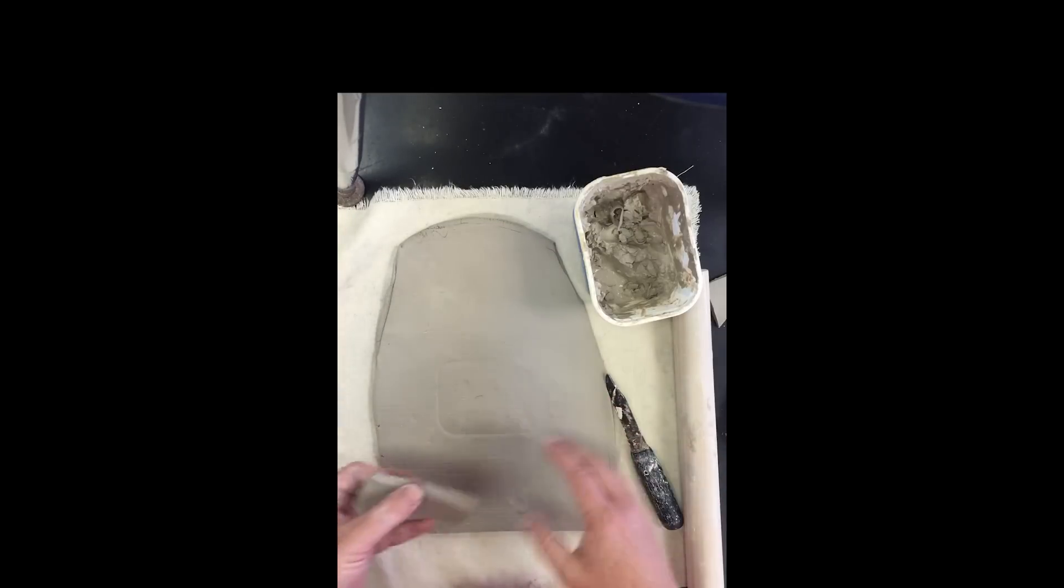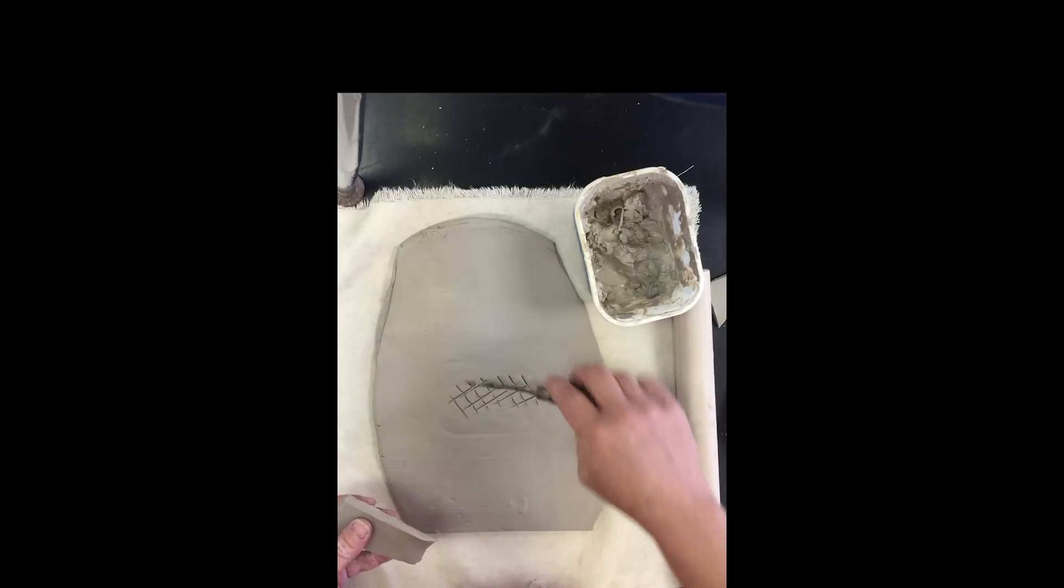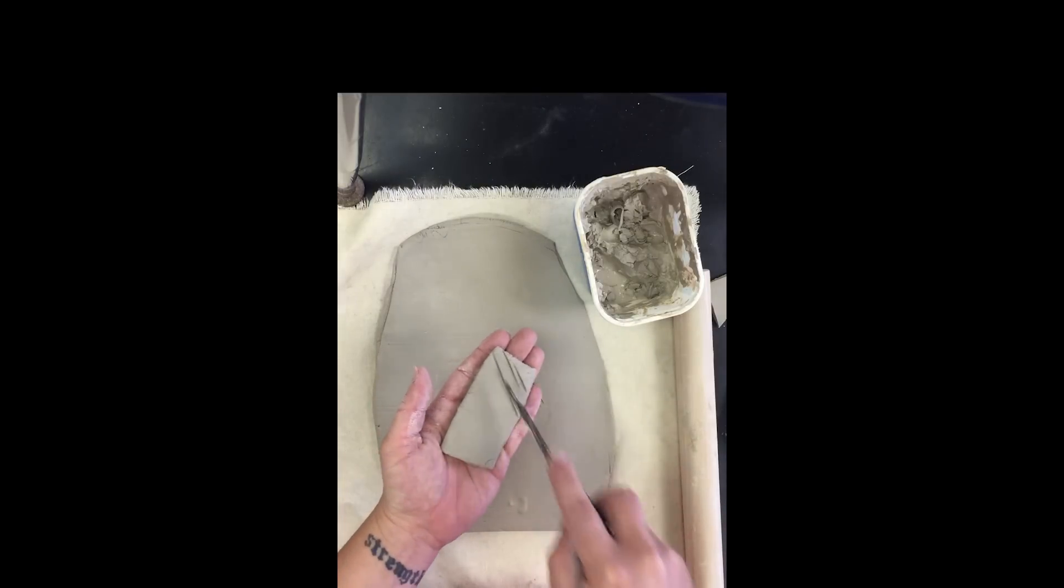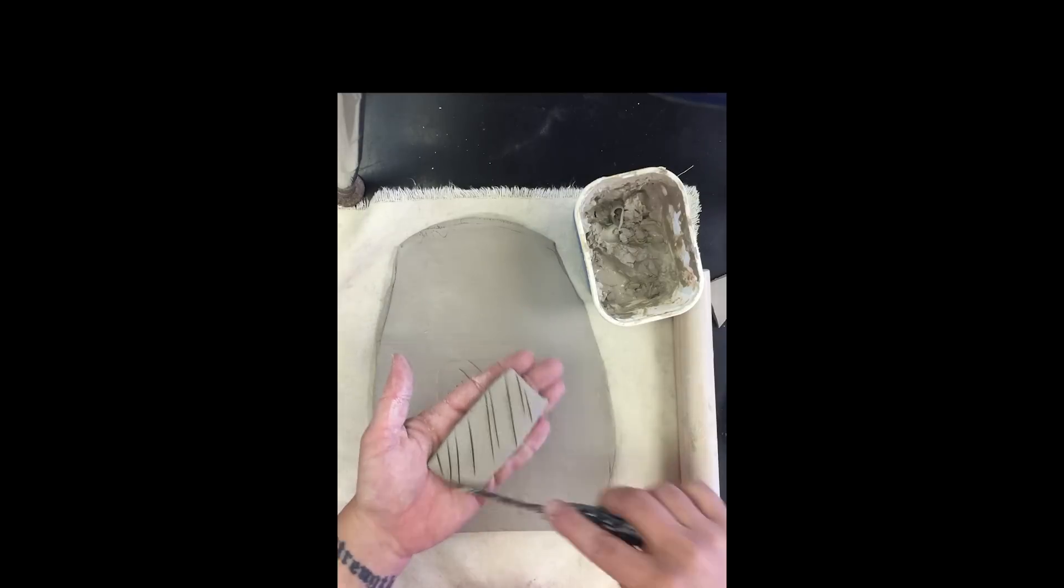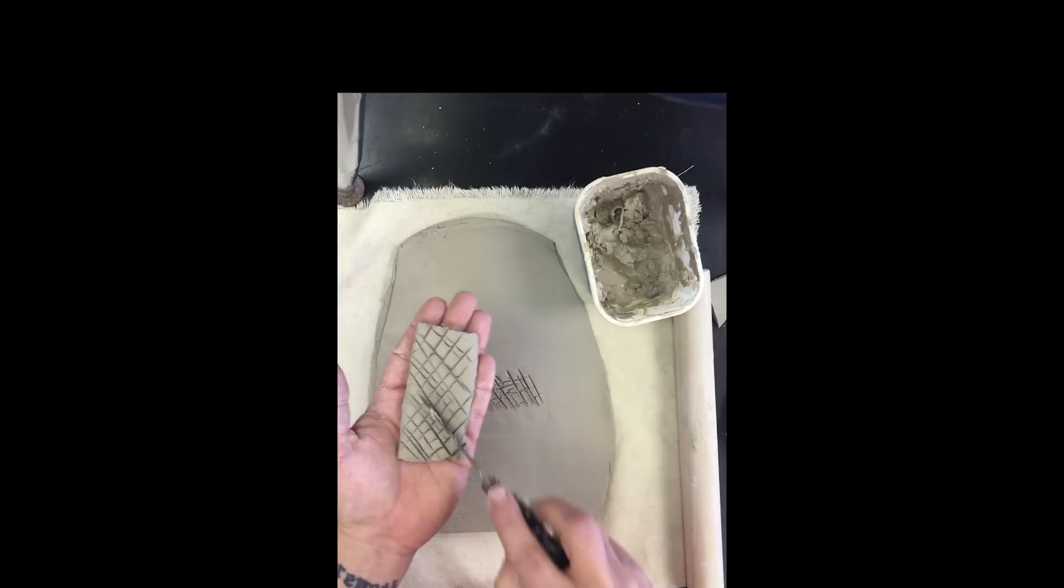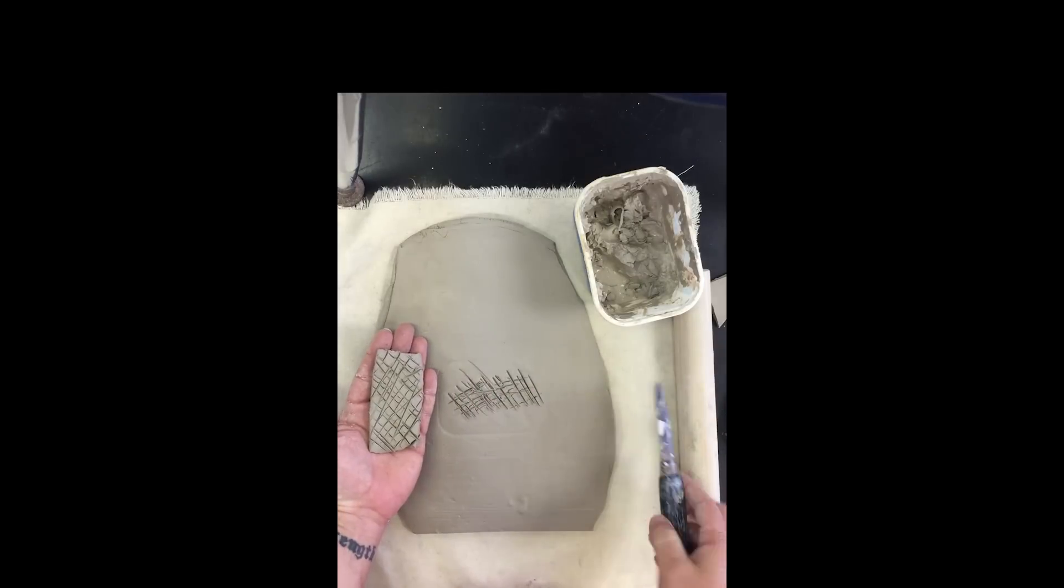If you do not use slip, everything will fall off. If you don't score it, it won't stick either. So you have to make sure you score and slip. So I'm going to put this right here. I want to score where it's going to go. Scoring is making marks in your clay. I typically will make sure they're like X's. If you're doing a bigger piece of clay like this, you need a lot because you don't want an air pocket to be underneath this piece of clay. I also need to score the back of this. They are not perfect by any means, just marks that are crisscrossing over each other.